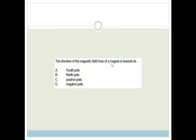Let's move on. Direction of the magnetic field lines of a magnet. It is always towards its north pole. I'm not even discussing this with you. Learn it. It's the north pole.